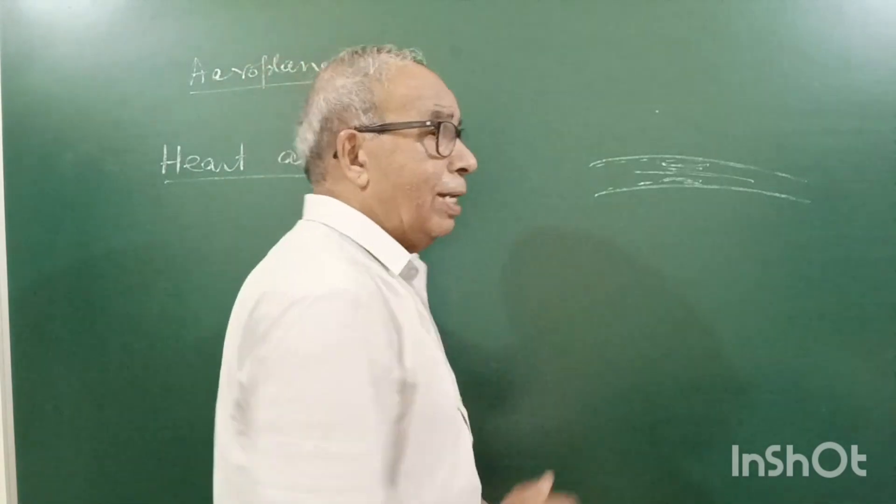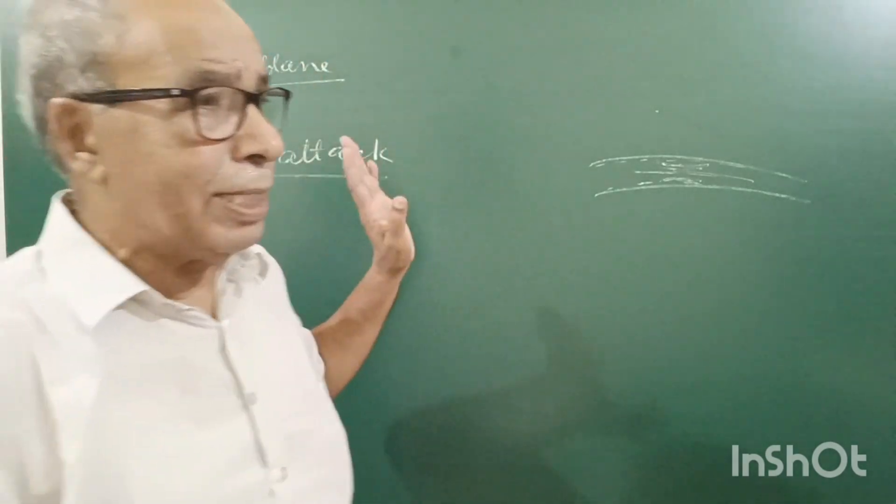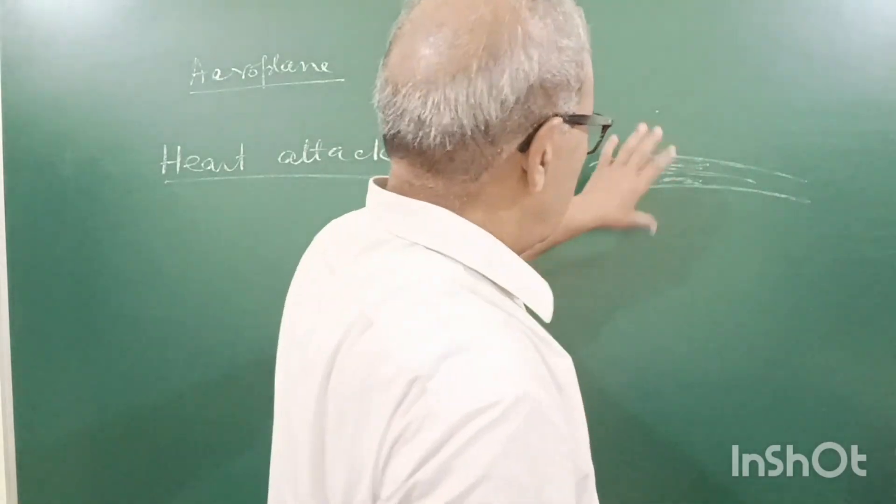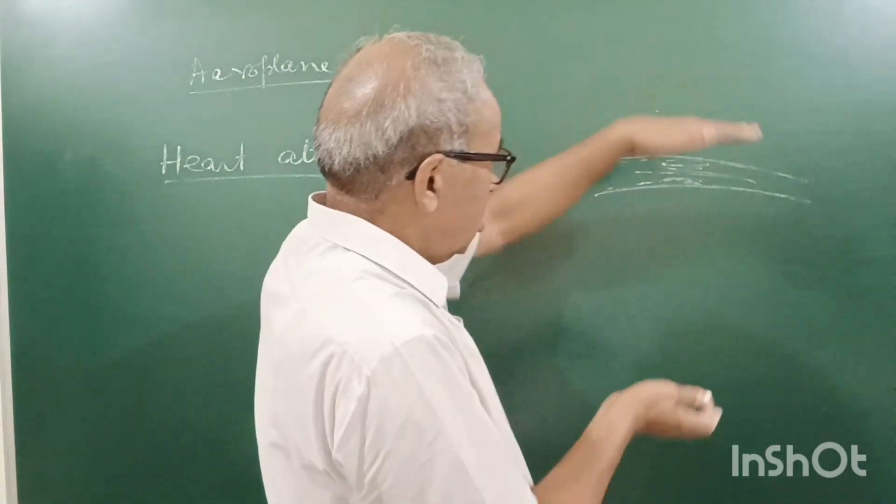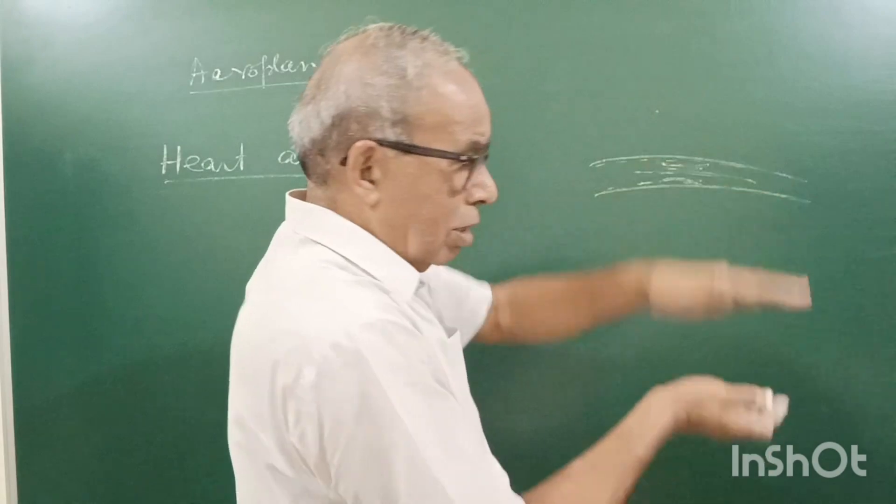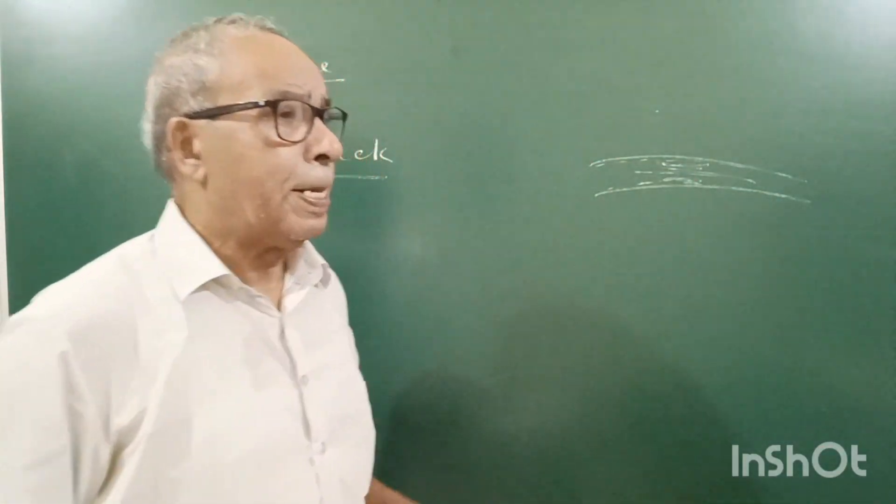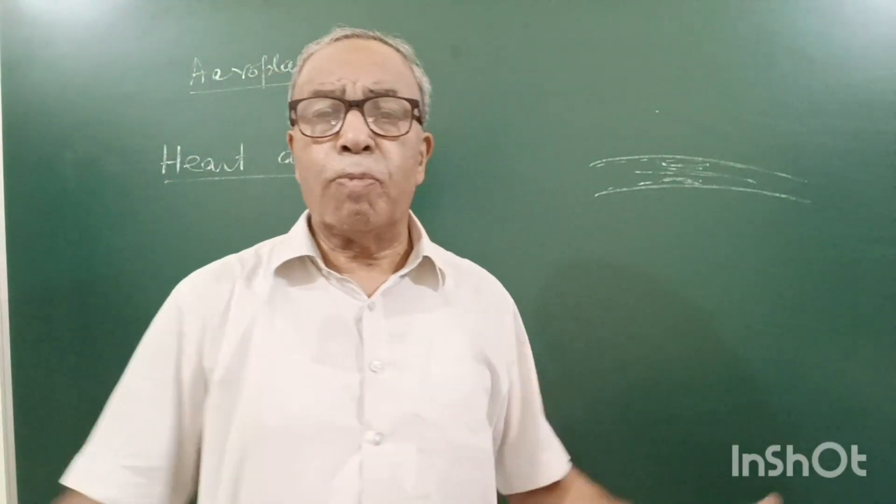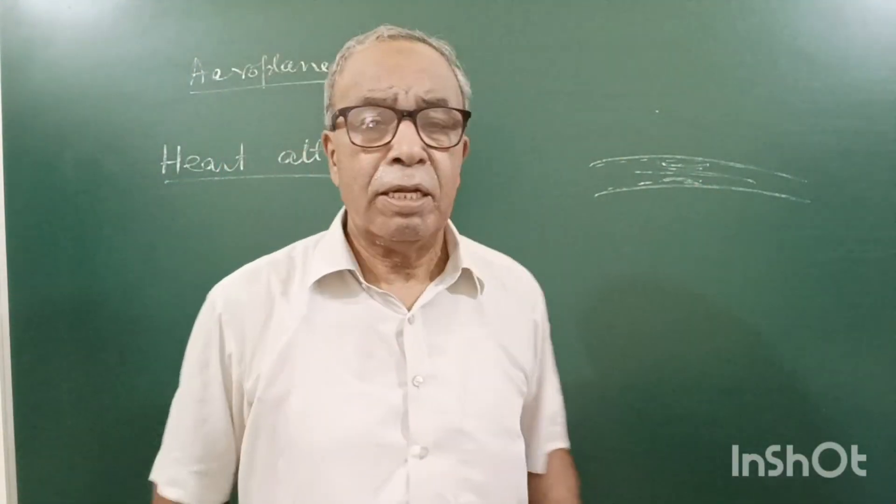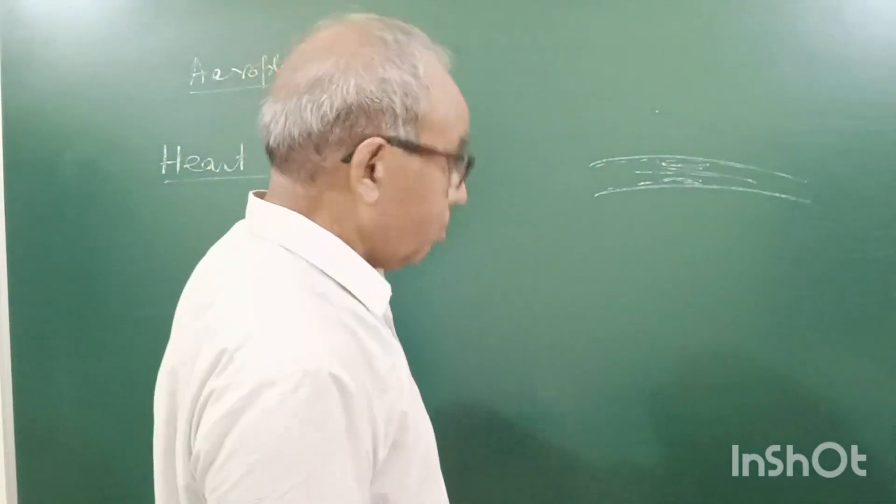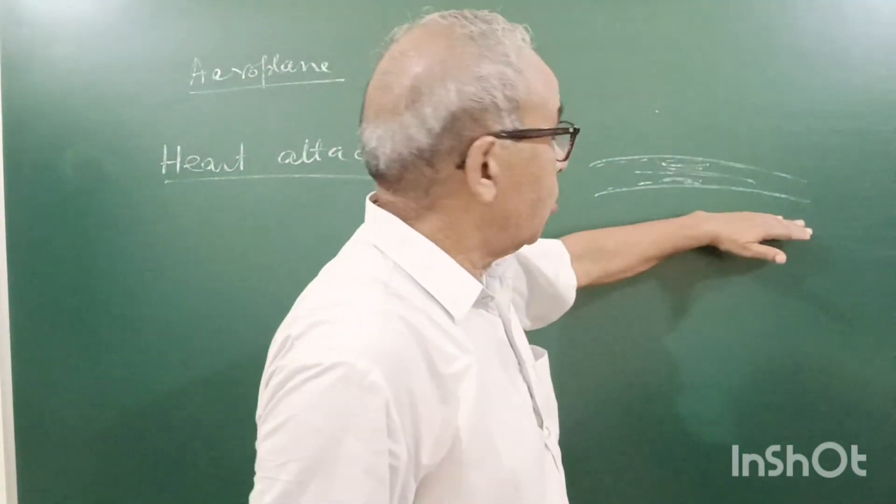Actually, for the supply to continuously take place, when the blood flows, the pressure decreases. So, the veins get stuck together. The heart applies more pressure to open this. So, due to that, a massive heart attack will occur. This is one of the examples.